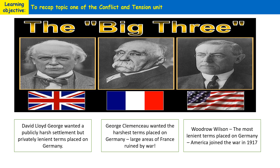David Lloyd George wanted to punish Germany during the Paris Peace Conference and in the terms of the Treaty of Versailles. He wanted to punish them publicly because he was aware that the British public had a sense of resentment towards Germany — the fact that many British men had died between 1914 and 1918, which led to the public wanting revenge and retribution. However, Lloyd George was caught in the middle of what the public wanted and what was best economically for Britain, since Germany was one of Britain's largest trading partners.